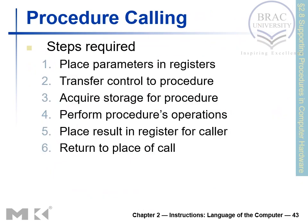Now, procedure calling — what are the steps associated with a procedure call? The first one is to place parameters in the register. We need to place the parameter values in the register, then transfer control to the procedure, acquire storage for the procedure, perform the procedure's operation, place the result in the register of the caller, and then return to the call site. These are the basic operations we need to do when performing procedure calling.